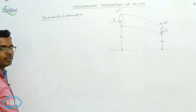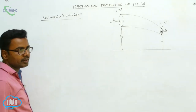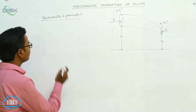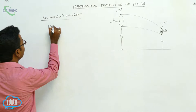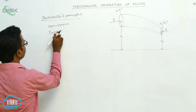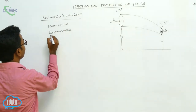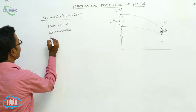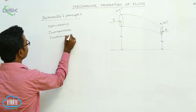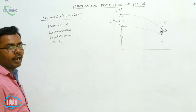Here we discuss Bernoulli's principle. This principle is basically applied to ideal fluids. What is an ideal fluid? The fluid is said to be ideal when it is non-viscous, incompressible, irrotational, and steady. This type of fluid is said to be an ideal fluid.